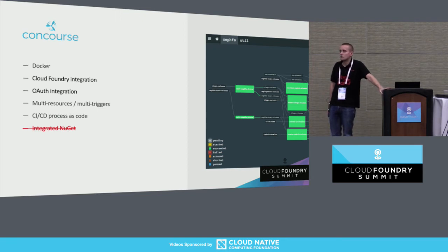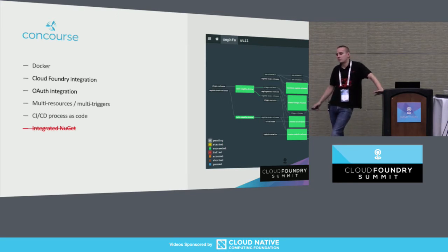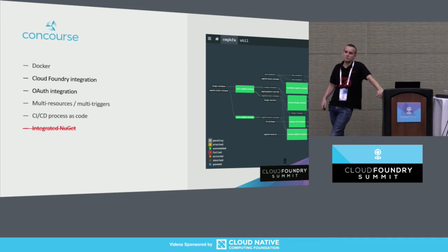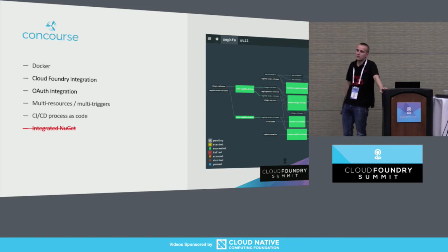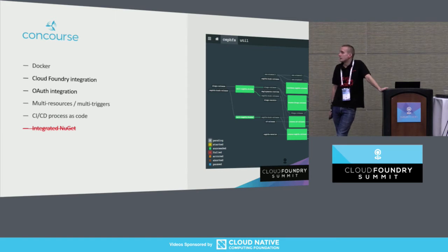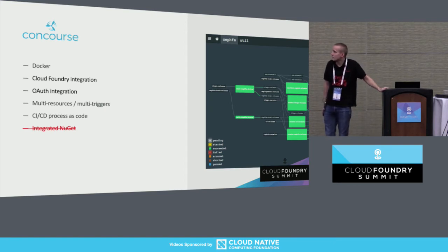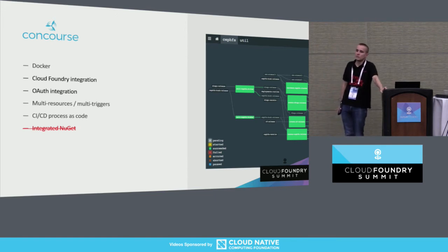We can also use the same authentication as in Cloud Foundry, for example OpenID. Unlike TFS, Concourse allows multi-resource triggers, so we can have our source code in one Git repository, the pipeline definition in another, and build scripts in a third. And the biggest advantage compared to TFS is that the CI/CD definition is written in YAML — very easy to compare and maintain. The biggest disadvantage is that NuGet is not integrated, so we can't observe NuGet and trigger the next pipeline when a new version is published.